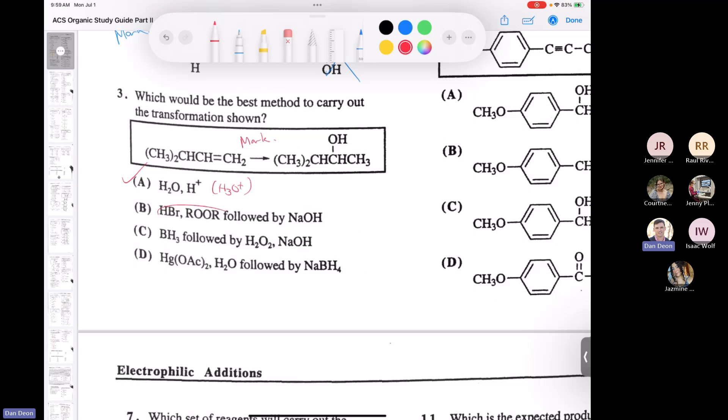This one here, HBr and peroxide, well, that's got nothing to do with it. This one is anti-Mark, hydroboration oxidation. So this is not correct. Well, hold the phone because oxymercuration-demercuration is also Markovnikov, but we avoid a rearrangement. So we have to ask ourselves, is there going to be a rearrangement here?